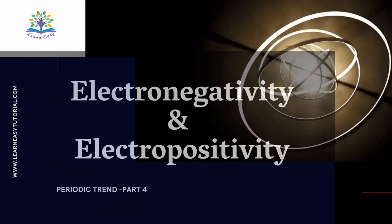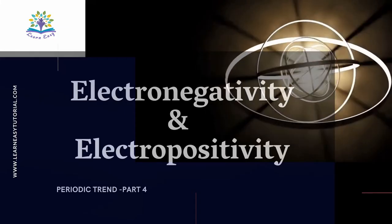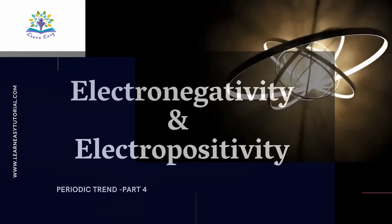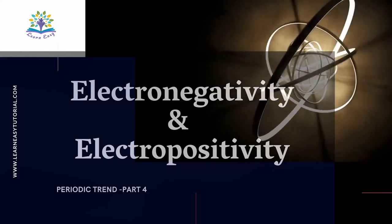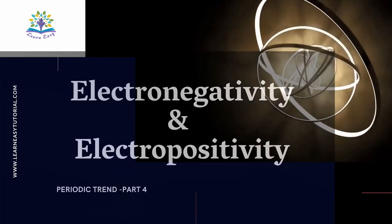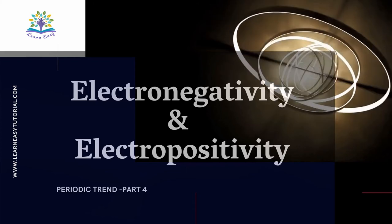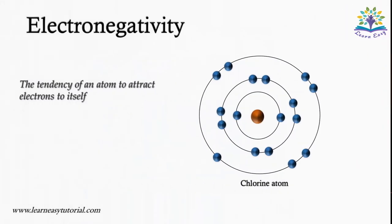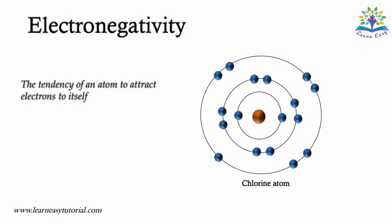Hello students. In this video we will be learning about the trend of electronegativity and electropositivity in the modern periodic table. Electronegativity is a tendency of an atom to attract electrons to itself.